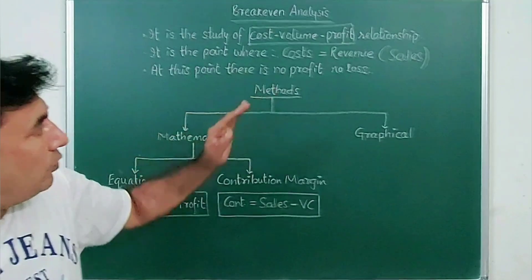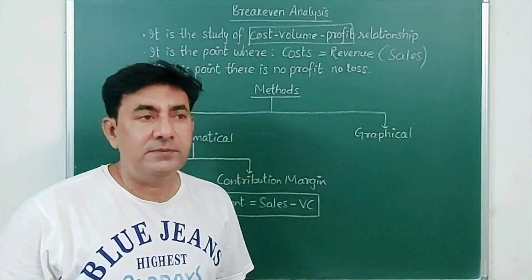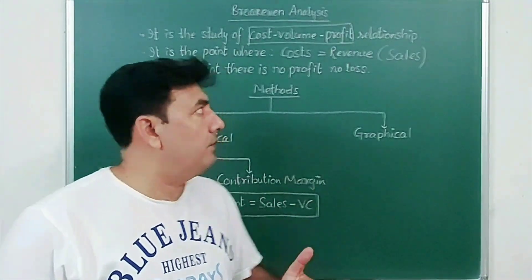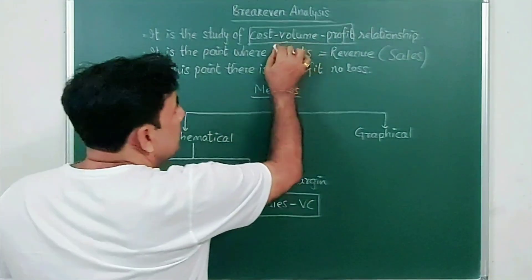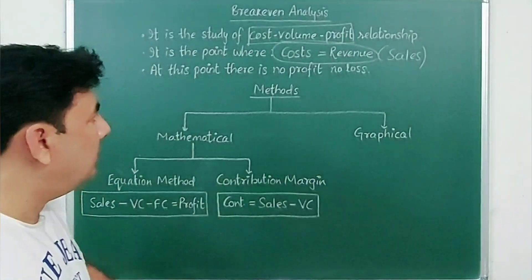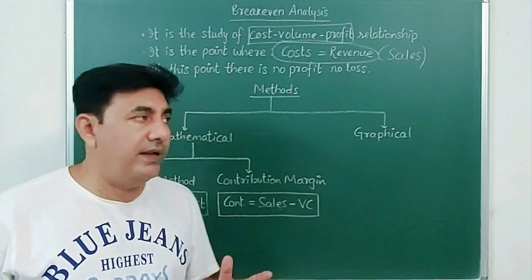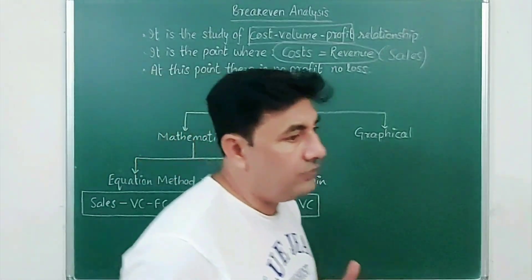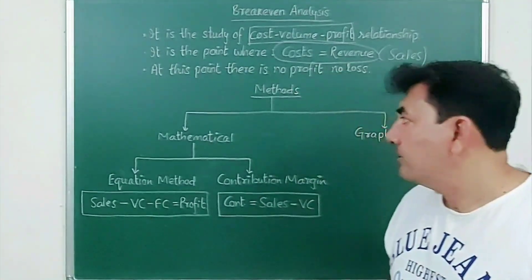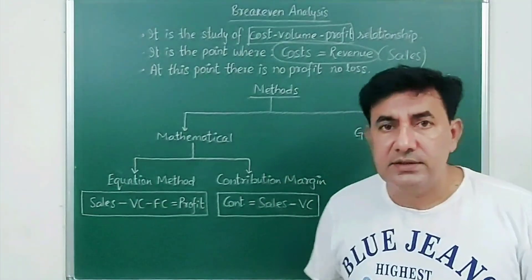At this point there is no profit, no loss — neither profit nor loss. That means the firm's cost is equal to revenue. There are two methods of finding break-even analysis, which is very important to understand because this is a numerical exam. One is mathematical and the other is graphical.